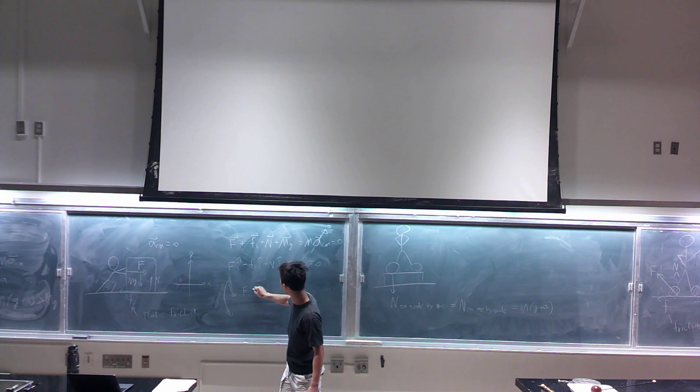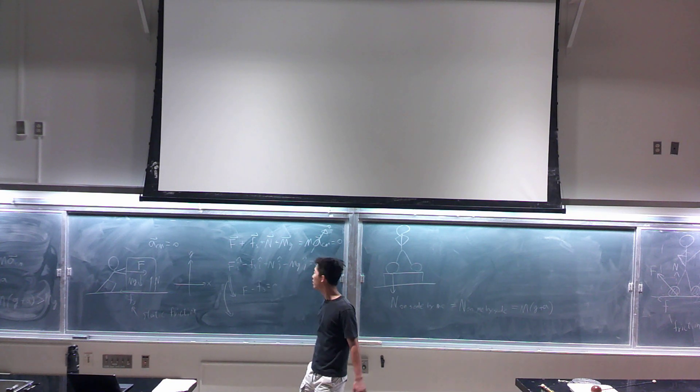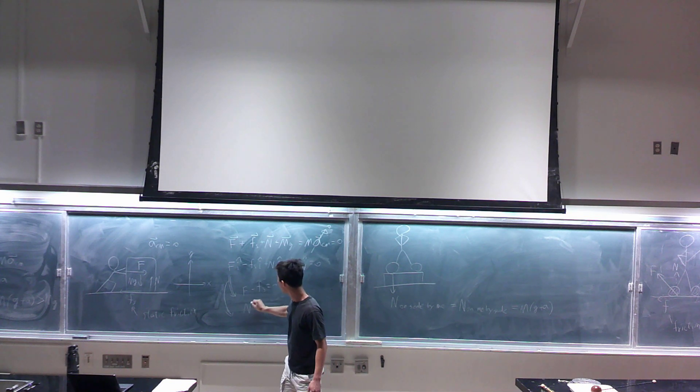The I component: F minus Fs equals zero. These are the I components. The J component is N minus Mg equals zero.